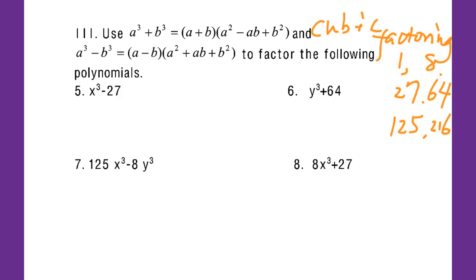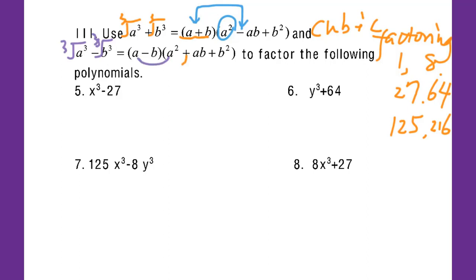Let's look at the formula. For a cubed plus b cubed, take the cubic root of both to get a and b, giving (a plus b). Then the second factor: square the first term to get a squared, use the opposite sign (minus), multiply a times b for the middle term, then plus b squared. For a cubed minus b cubed, same process: you get (a minus b), then a squared, opposite sign (plus), a times b, then b squared.